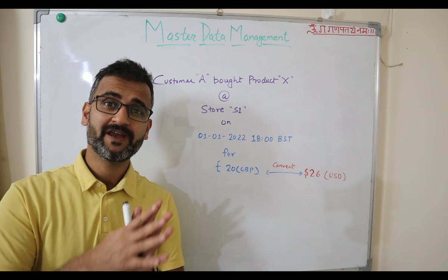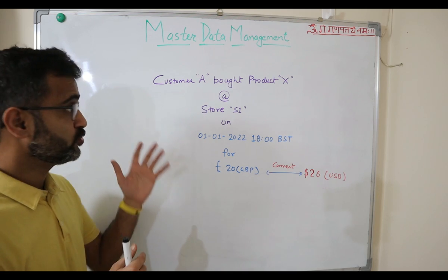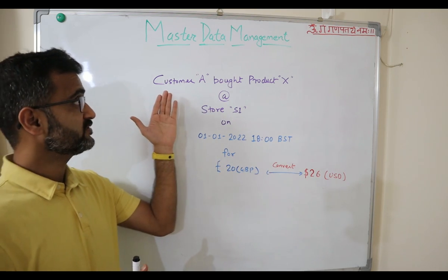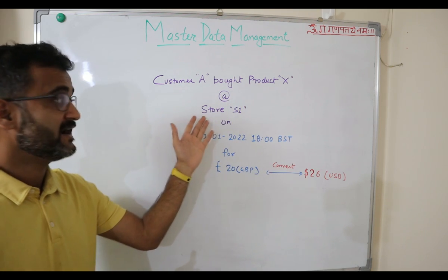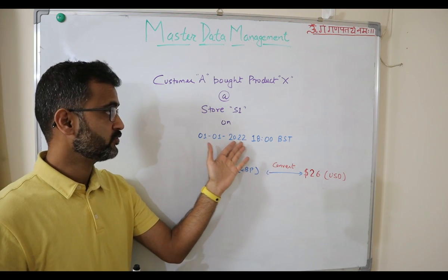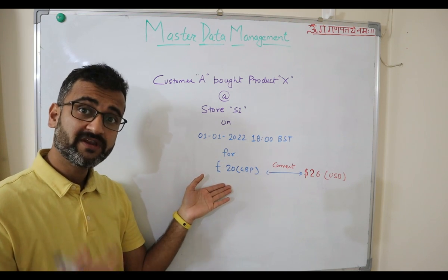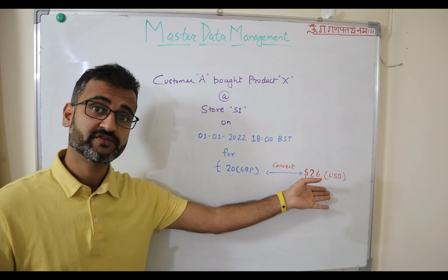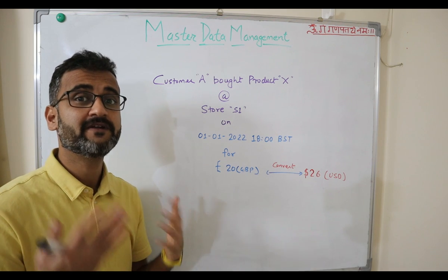Even before we understand the definition of master data management, let's understand it through an example or transaction. Suppose customer A bought product X at a store S1 on 1st of January 2022 at 18:00 BST for 20 pounds, which converts into $26. Now in this whole statement, we can see three different types of data.